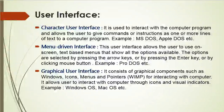The most commonly used interface is the graphical user interface (GUI). It consists of graphical components such as windows, icons, menus, and pointer — altogether called WIMP — for interacting with the computer. It allows users to interact with the computer through icons and visual indicators instead of text-based commands. Users can simply click them to process instructions and no need to remember complex command lines. Users can give instructions using the keyboard and mouse and view output on the monitor. This is the most user-friendly environment provided by modern operating systems. Examples are Windows operating system and Macintosh operating system.